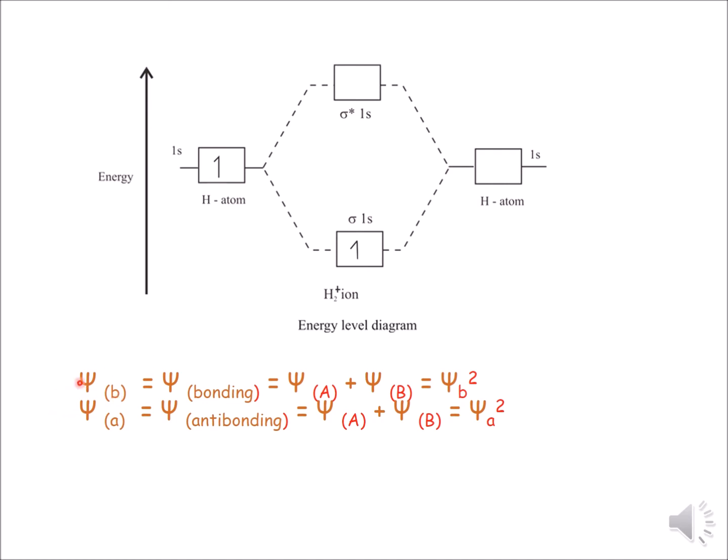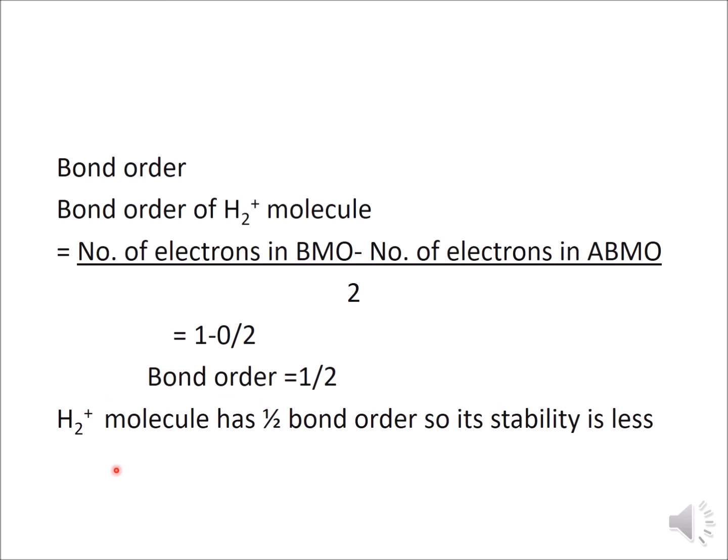To summarize in terms of wave functions: ψ_bonding refers to constructive overlapping and ψ_anti-bonding refers to destructive overlapping. ψ_bonding = ψ_a + ψ_b, where ψ_a is the wave function of the hydrogen atom and ψ_b is the wave function of H+. When addition of wave functions occurs, constructive overlapping takes place and the bonding molecular orbital forms.